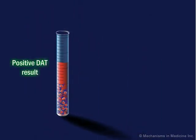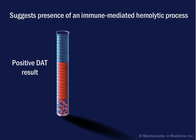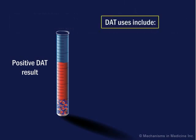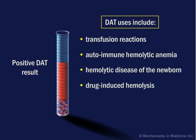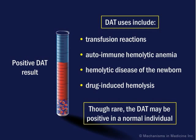A positive DAT indicates that the red cells have been coated in vivo with immunoglobulin or complement and may suggest the presence of an immune-mediated hemolytic process. The DAT is used in the investigation of transfusion reactions, autoimmune hemolytic anemia, hemolytic disease of the newborn, and drug-induced hemolysis. Rarely, the DAT may be positive in a normal individual.